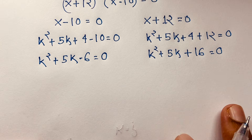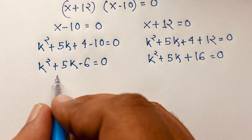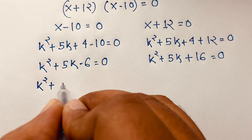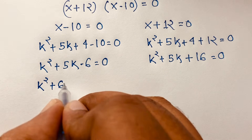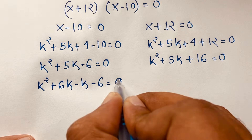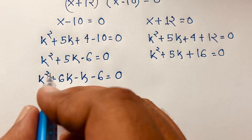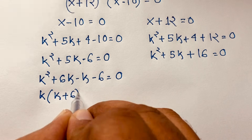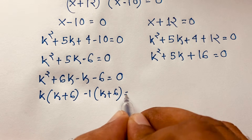Now I solve k² + 5k - 6 = 0 using the middle-term factoring. I need 6 × 1 = 6, and 6 - 1 = 5. So k² + 6k - k - 6 = 0. Taking k common: k(k + 6), and taking -1 common: -1(k + 6) = 0, giving (k - 1)(k + 6) = 0.